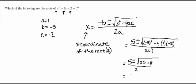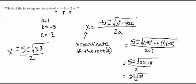So further simplifying, we're going to get 5 plus or minus the square root of 33 over 2. I'm going to go ahead and write this over here. 5 plus or minus the square root of 33 over 2. So, and that's x equals.